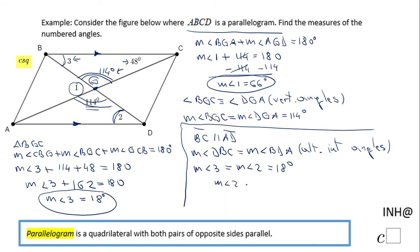The measure of angle 2 is 18 degrees, and that's it. If you enjoyed this video, don't forget to click the like button and come back to iNeedHelpAtCSquared for more help. Thank you.